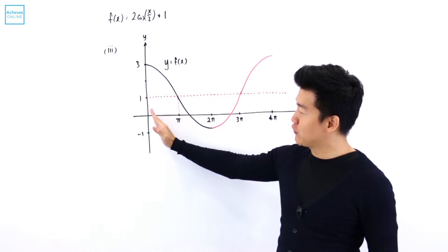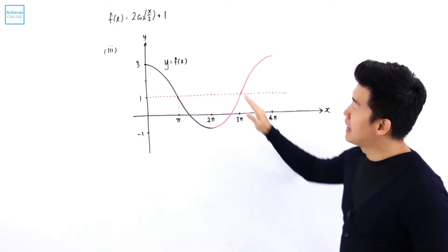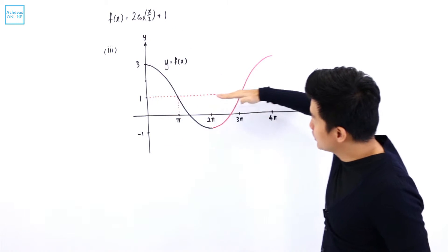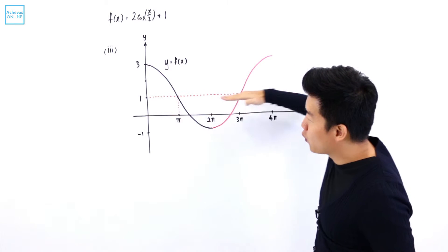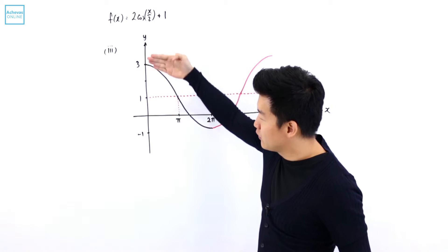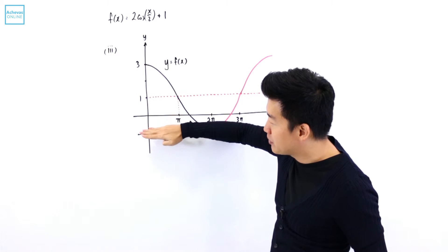I've sketched from 0 all the way until 4π. Because the amplitude is 2 and it is shifted up by 1 unit, the middle portion here is at 1. It goes up by 2 units, so the highest point is 3, and goes down by 2 units, so the lowest point is -1.